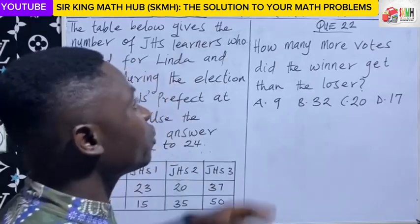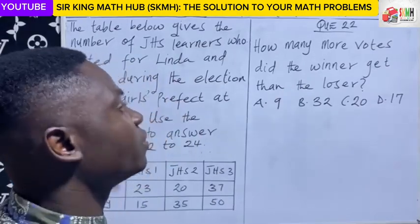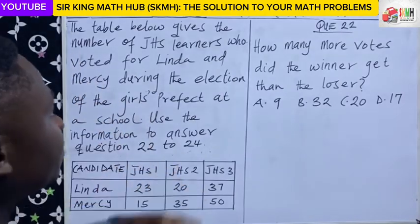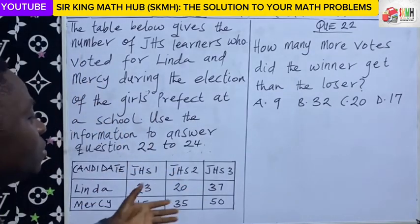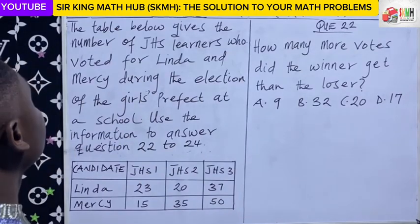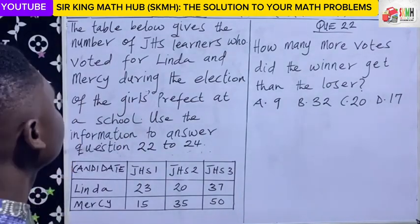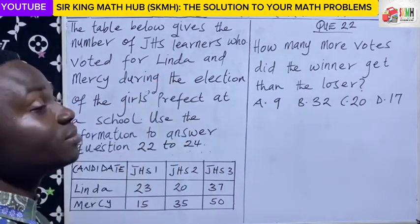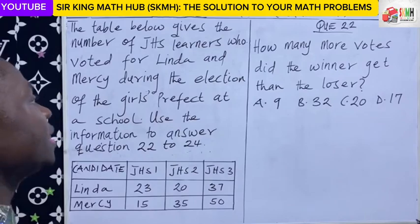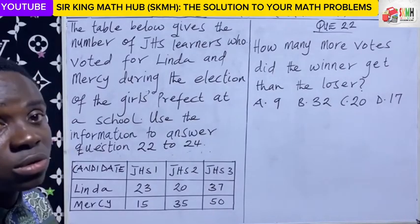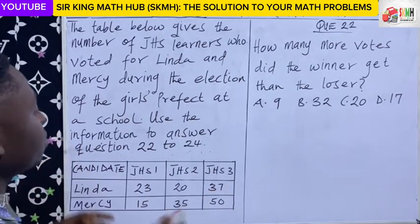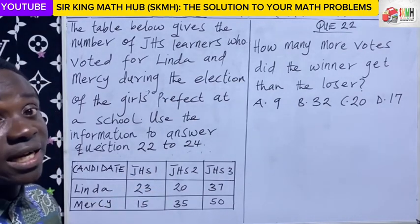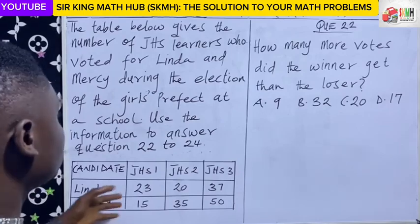Before we begin the questionnaire, a preamble has been given, so let's quickly go through it. A table has been given and it shows the number of GHS learners who voted for two candidates during the election of Girls' Prefect at a school. So this was the outcome of that election.